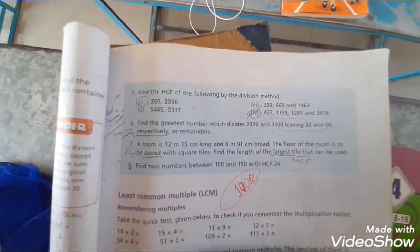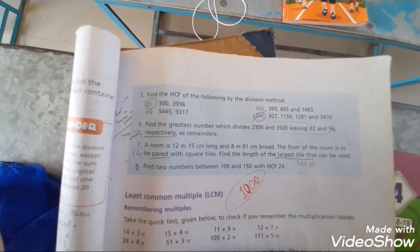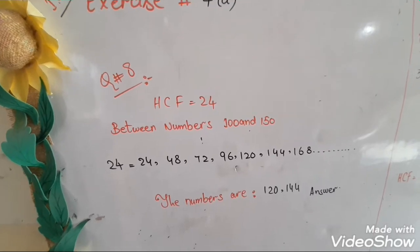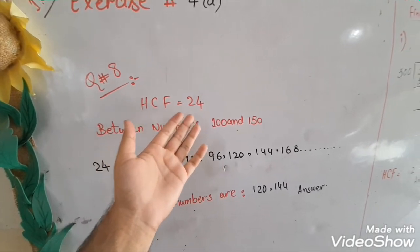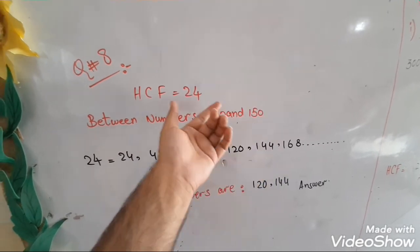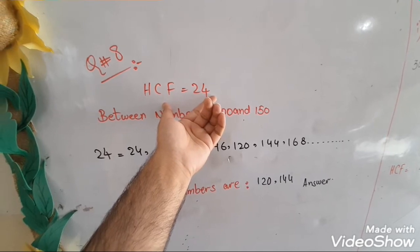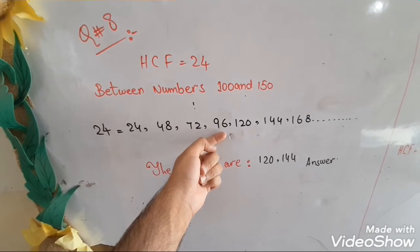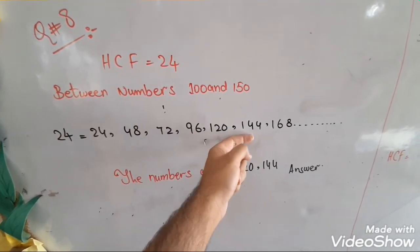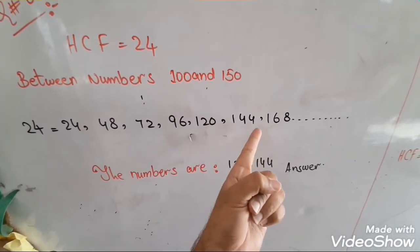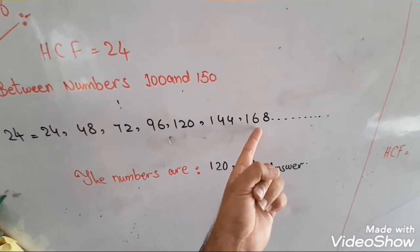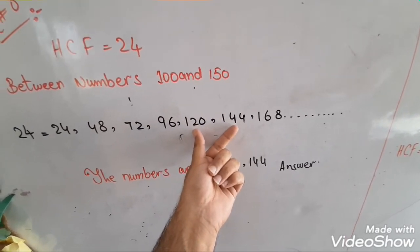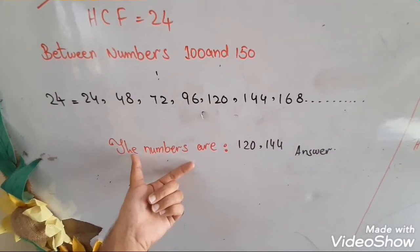Question number 8: find two numbers between 100 and 150 whose HCF is 24. आपने ऐसे numbers find करने हैं जो 100 और 150 के बीच में हों और उन दोनों का HCF 24 आए। Try the multiples of 24: 24×1=24, ×2=48, ×3=72, ×4=96, ×5=120, ×6=144, ×7=168. Since 168 is greater than 150, only 120 and 144 lie between 100 and 150. So the two numbers are 120 and 144.